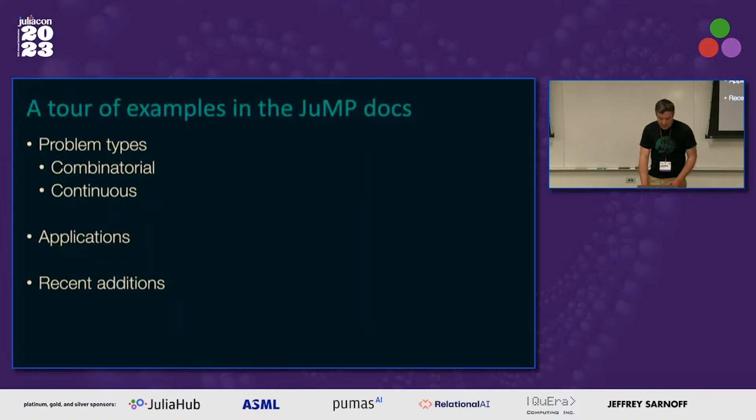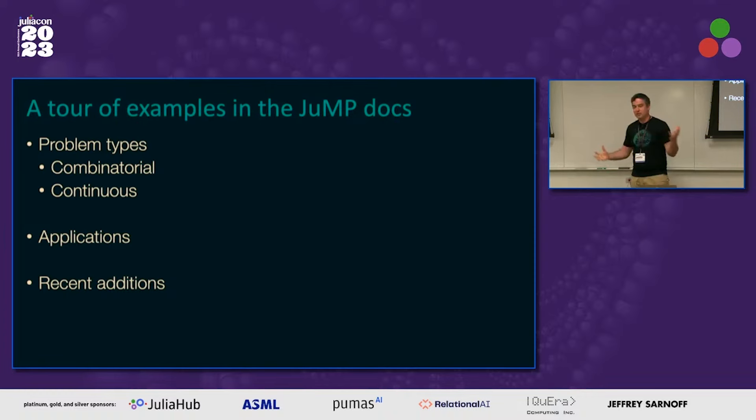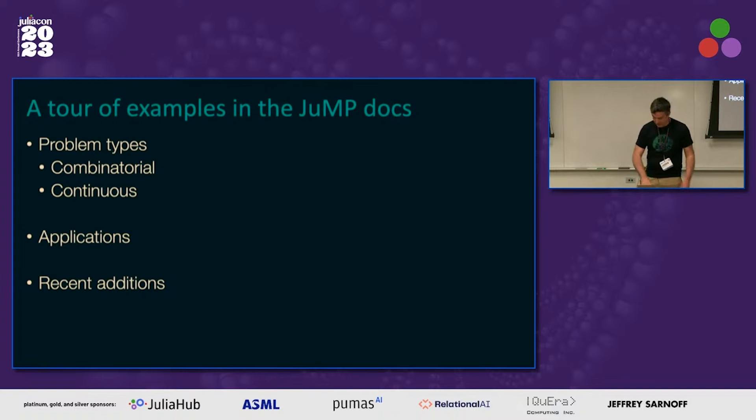Let's do a quick tour of examples in the JuMP docs. You might think the docs just help you understand syntax — but actually there's a whole bunch of interesting examples in there that I hope you'll be inspired to explore after this talk. I'm going to divide them into combinatorial types, continuous types, more specific applications, and recent additions and extensions.